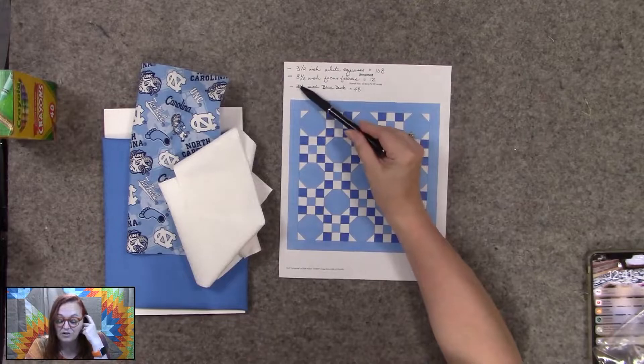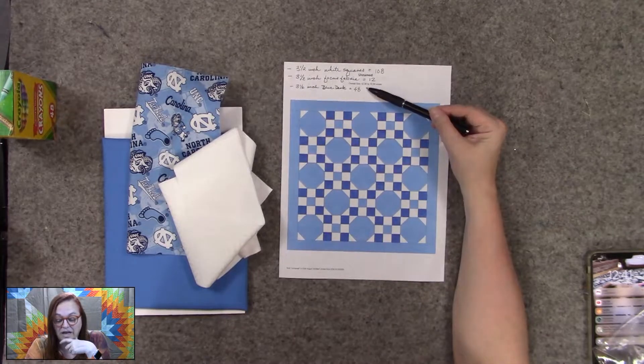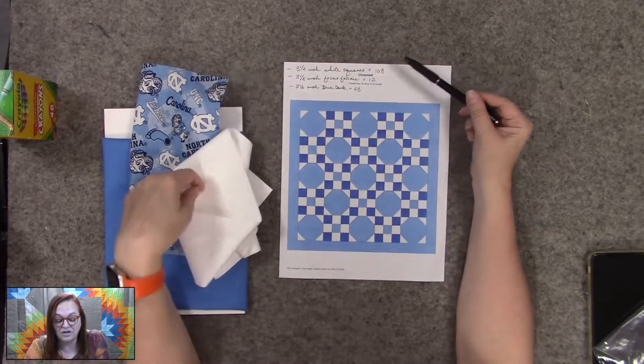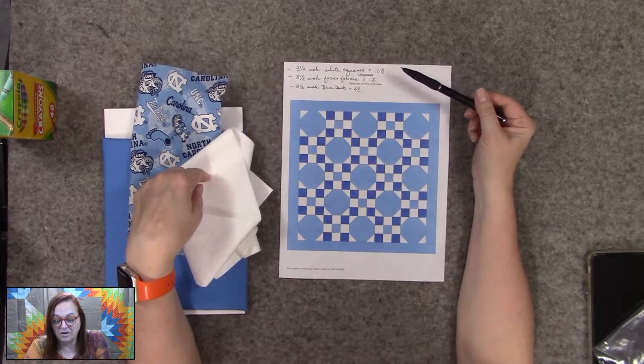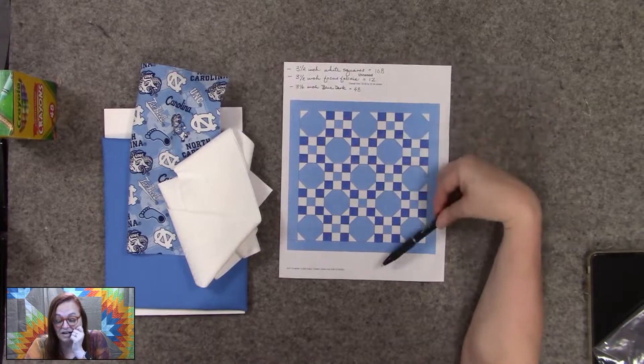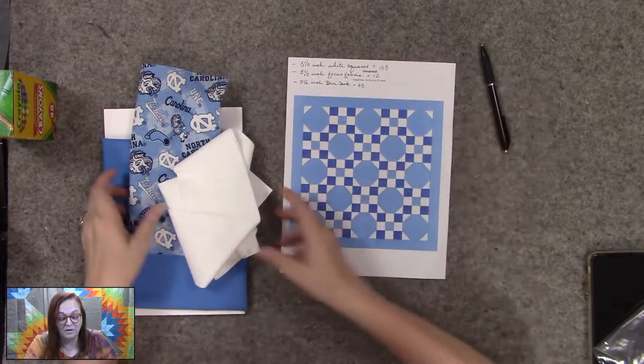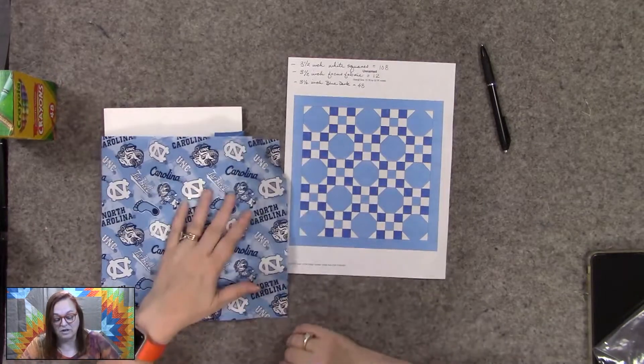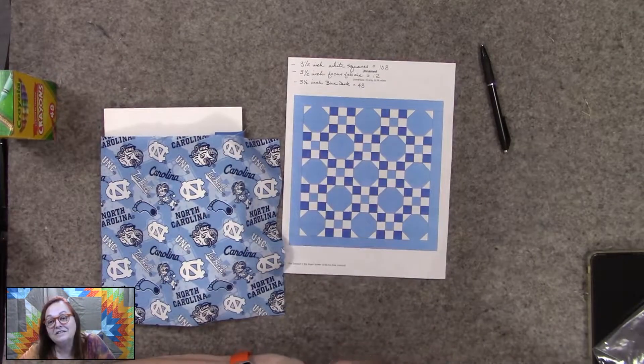Your dark blue, you're going to cut 48 out of your dark blue, so the most cutting you're going to do is your white. And that's it, that's not a lot of cutting and it's not a lot of blocks, and you're going to get a 52 by 52 inch quilt.